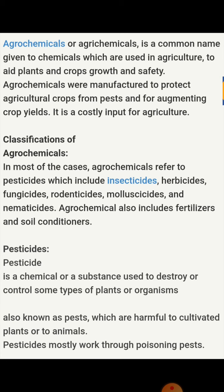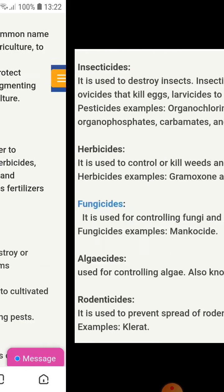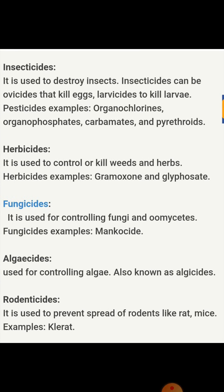First is pesticide. As the name suggests, 'pest' means pest and 'cide' means to kill. These are chemicals used to kill pests, also known as organisms that are harmful to cultivated plants or to animals. Pesticides mostly work through poisoning pests.